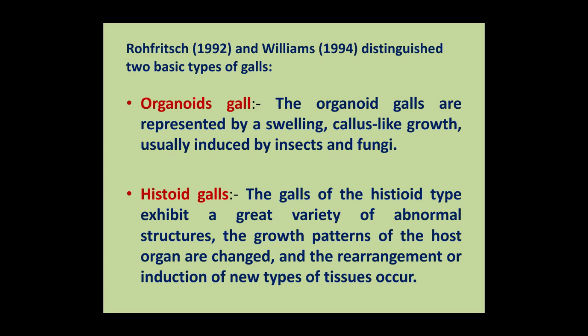The second type is histoid galls. The galls of the histoid type exhibit a great variety of abnormal structures. The growth pattern of the host organs are changed and the rearrangement or induction of new types of tissues occur in these histoid galls.